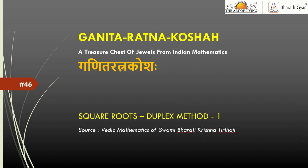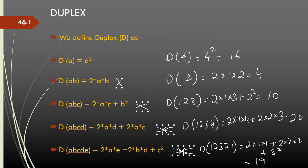To do this square root using this method, we need to refresh what is a duplex. We defined duplex D of a single digit number as a square of the number a. For example, if there are two digits a, b, it is 2ab. If there are three digits, it is 2 into a into c plus b square, etc. And so on and so forth.